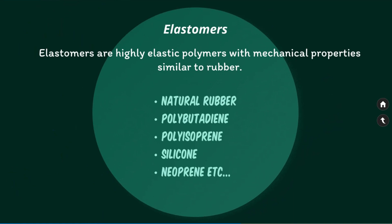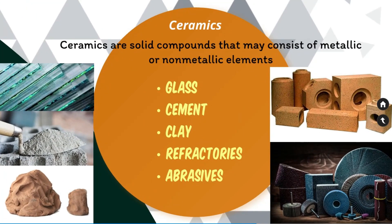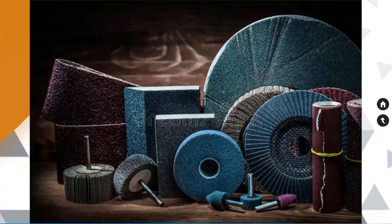Examples of elastomers are natural rubber, polybutadiene, polysulfide, silicone, and neoprene. The next engineering material category is ceramics. Ceramics are solid compounds that may consist of metallic or non-metallic elements. The primary classification of ceramics includes glasses, cements, clay products, refractories, and abrasives. Ceramics generally have excellent corrosion and wear resistance, high melting temperature, high stiffness, and low electrical and thermal conductivity. Ceramics are also very brittle materials.